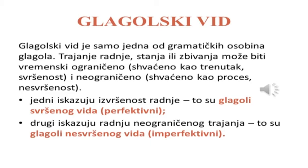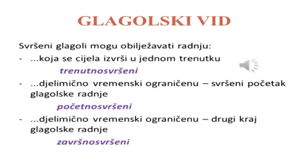Trajanje glagolske radnje u našem jeziku izražava se vidom. Glagoli po vidu su dvojaki: jedni iskazuju izvršenost radnje – to su glagoli svršenog vida ili perfektivni; drugi iskazuju radnju neograničenog trajanja – to su glagoli nesvršenog vida ili imperfektivni. Svršeni glagoli mogu obilježavati radnju koja se cijela izvrši u jednom trenutku – to je trenutno svršeni: dati, sjesti.